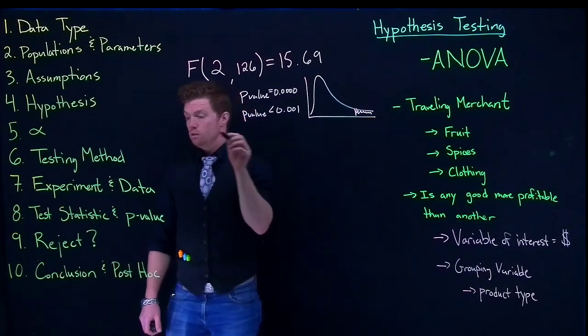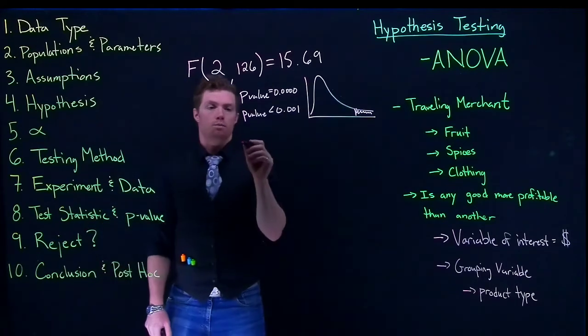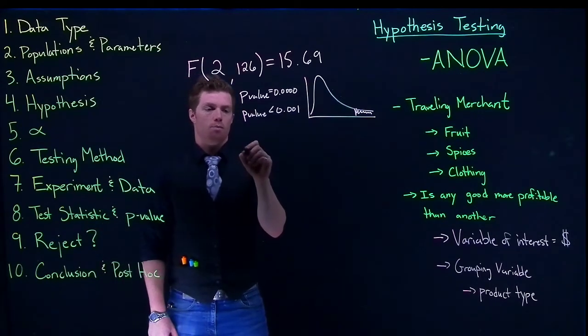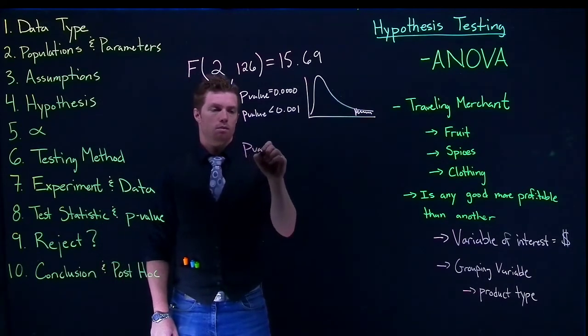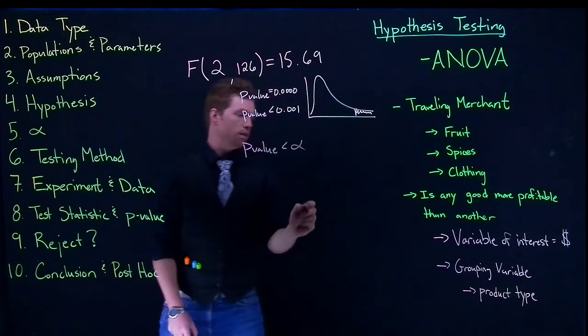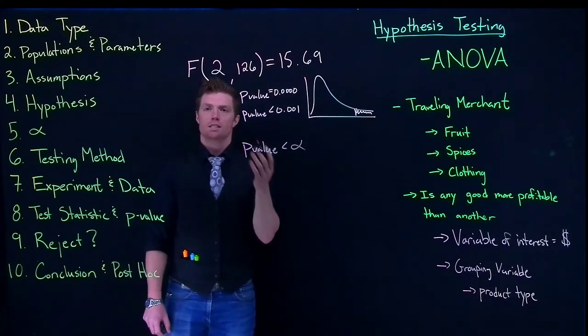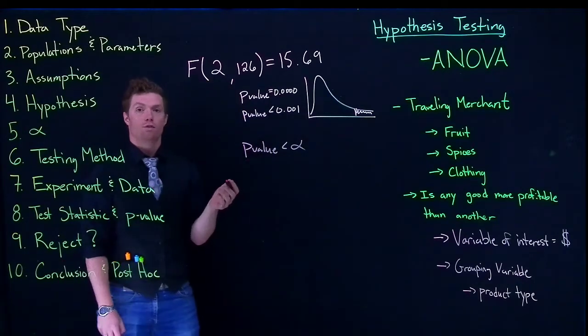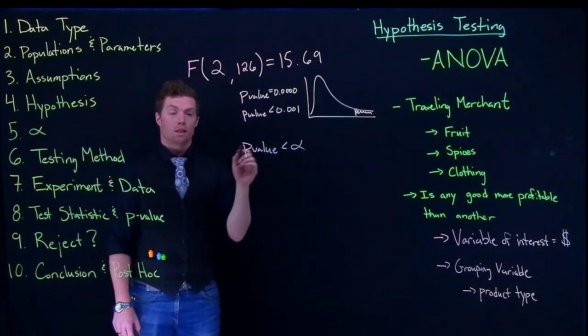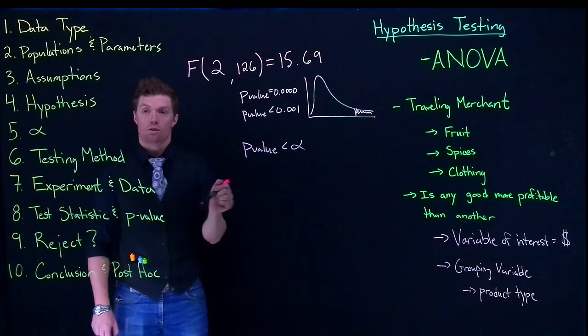So what we're going to do is we are going to reject because our p-value is less than alpha. So if we had set our alpha as 0.05, if our p-value is less than alpha we reject the null hypothesis.